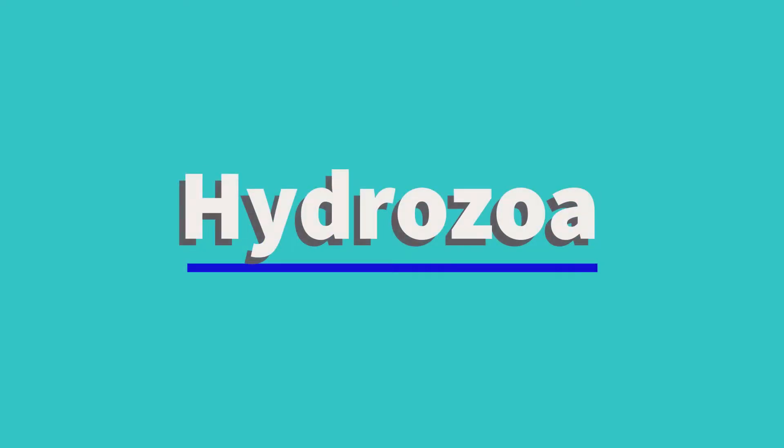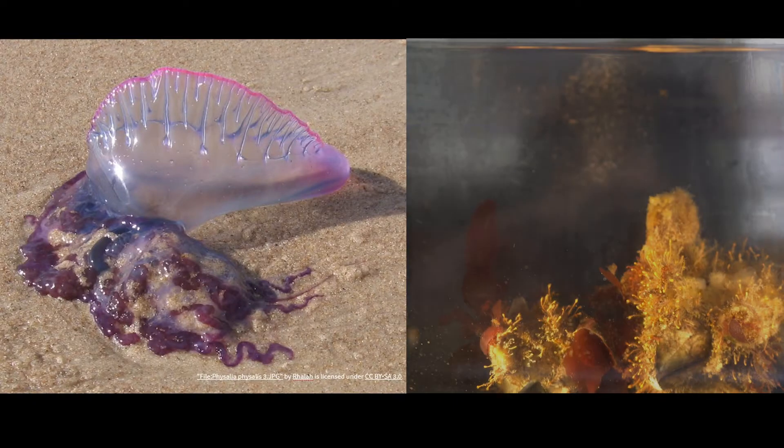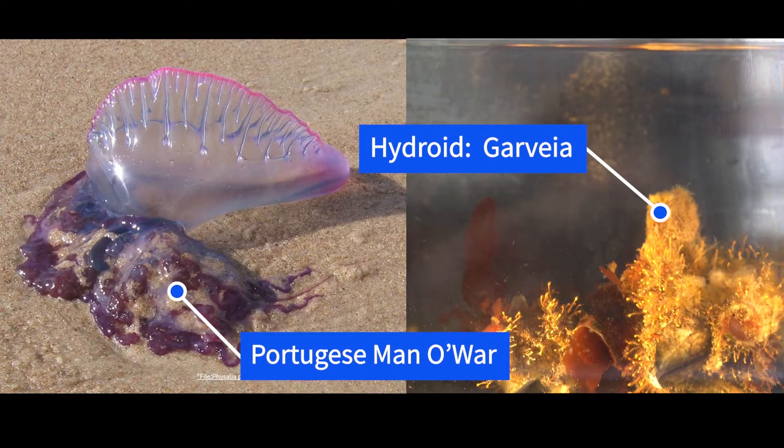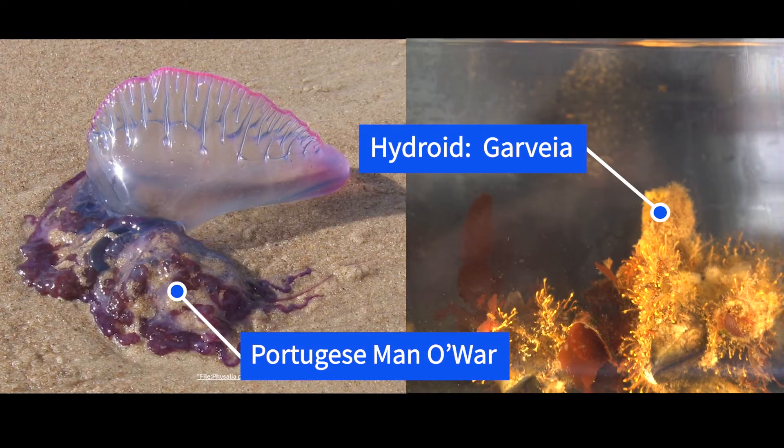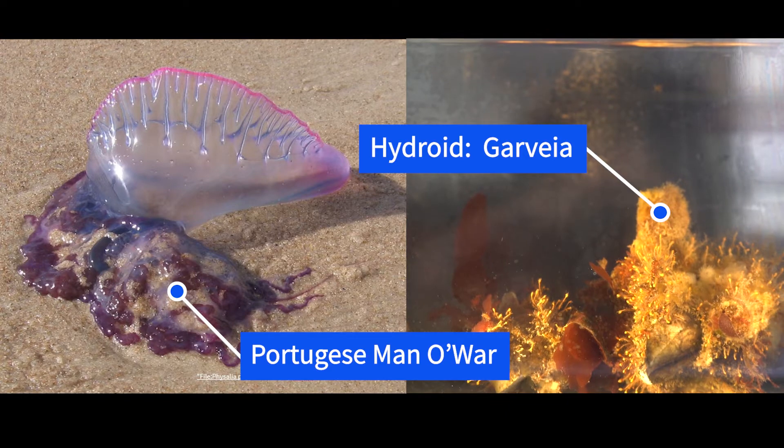This video is going to be focusing on the class Hydrozoa, which include colonial siphonophores such as the Portuguese Man O' War and smaller organisms such as hydras.